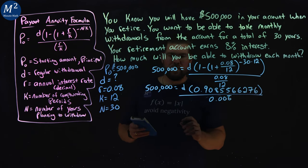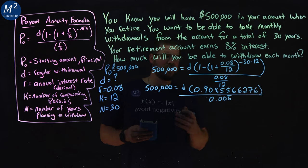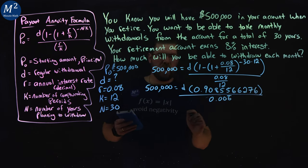0.08 divided by 12 is 0.006 repeating forever. So, let's go simplify these two things here. Actually, let's just multiply it over to the right-hand side, and then D's by itself.